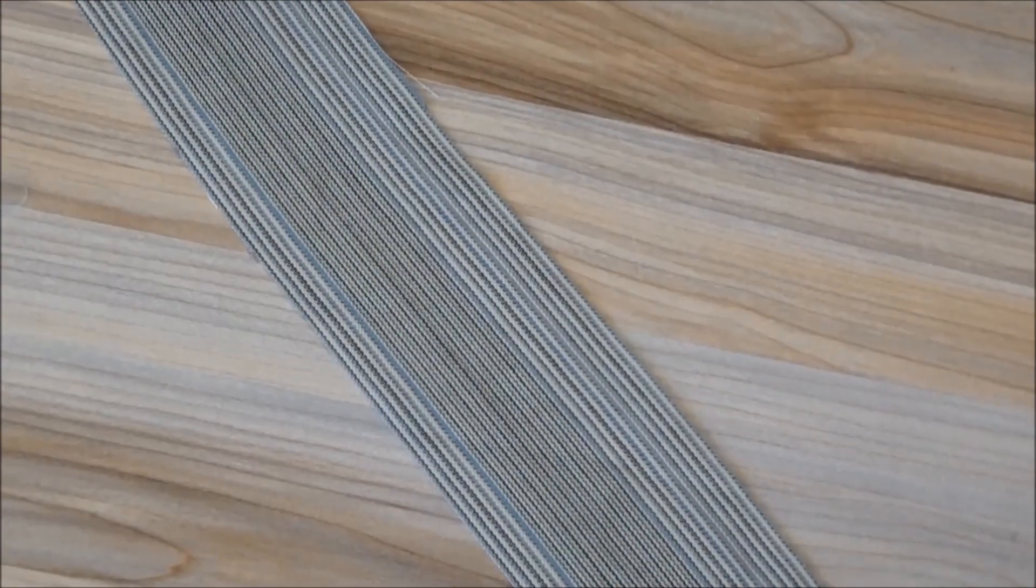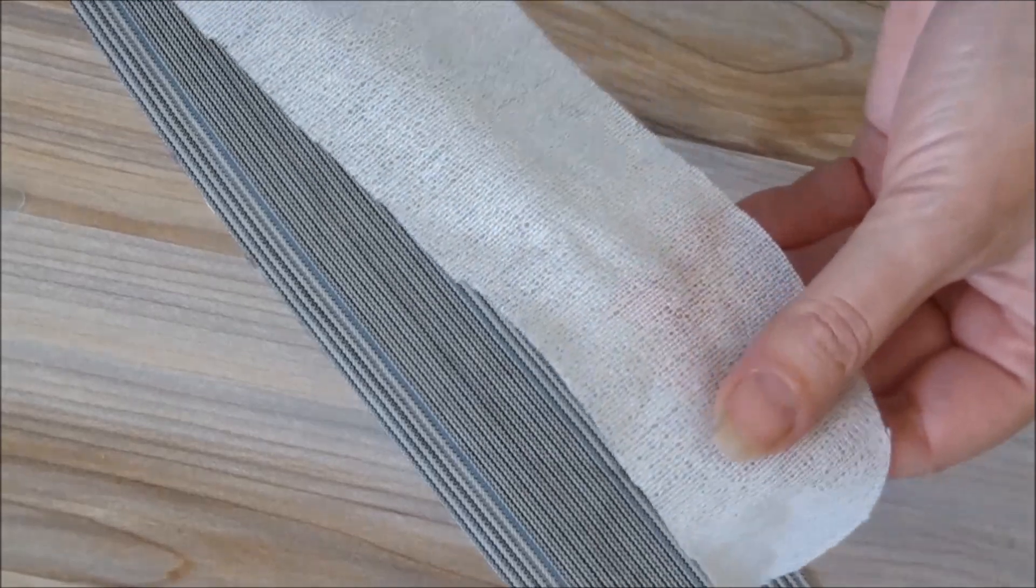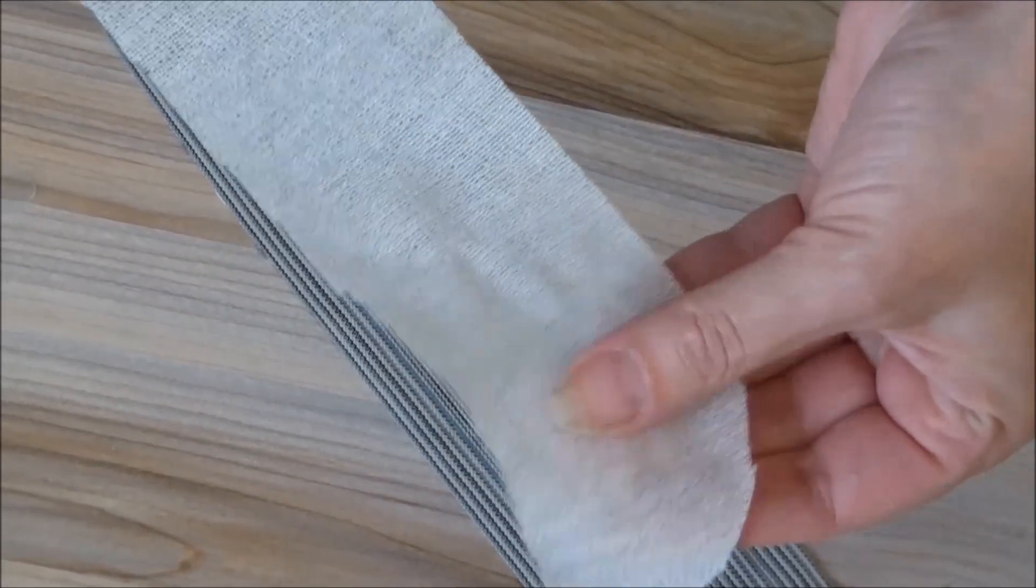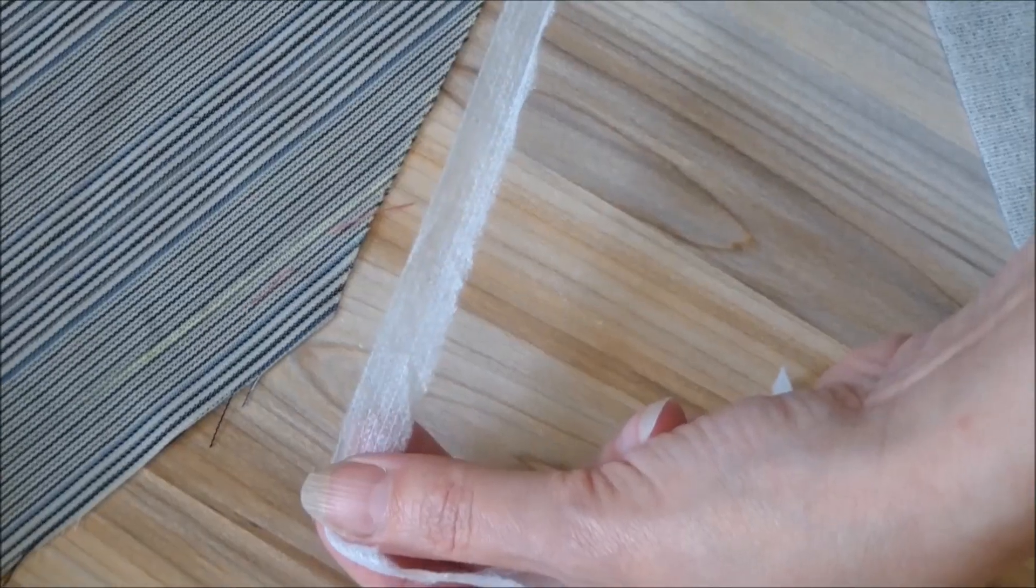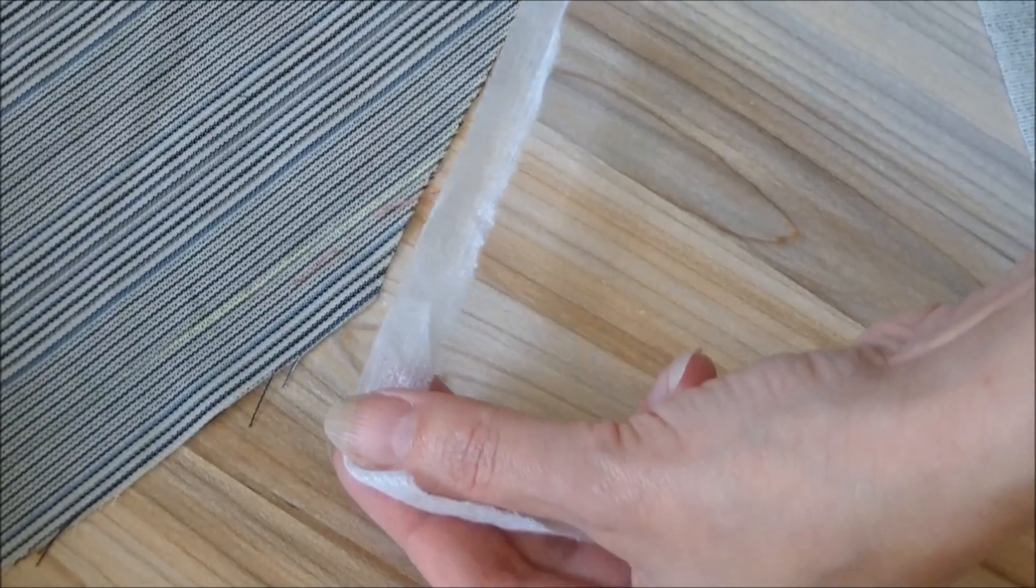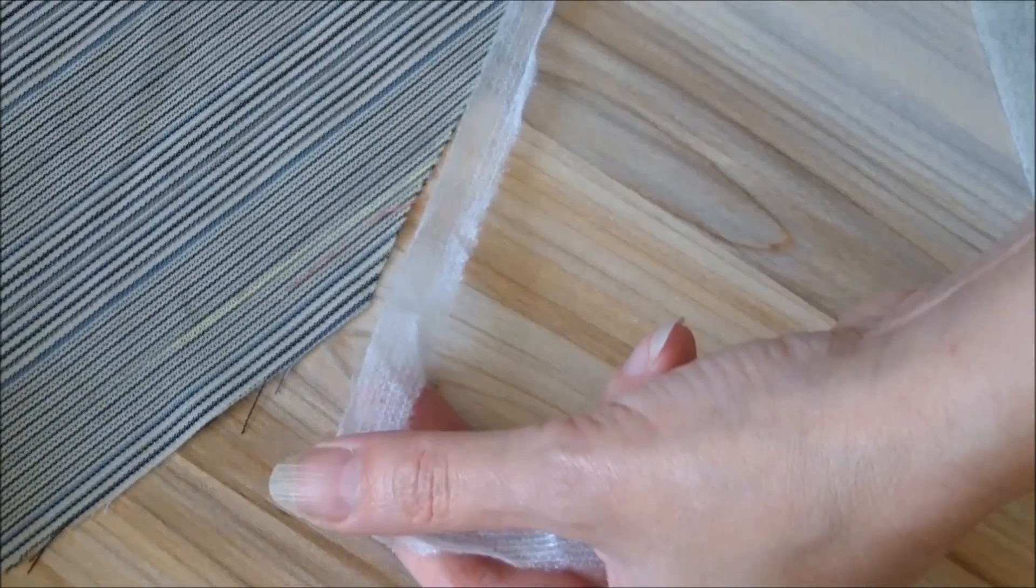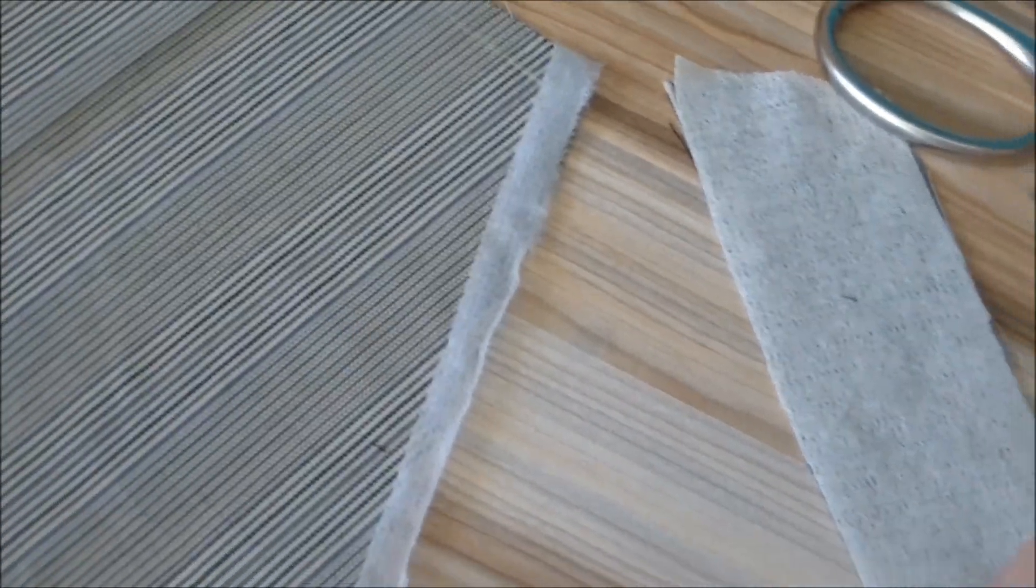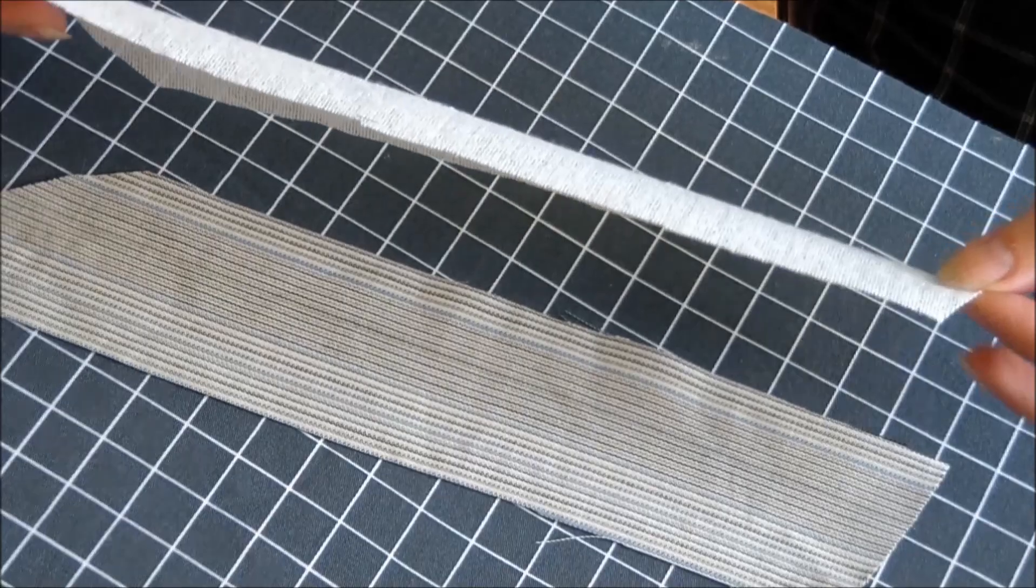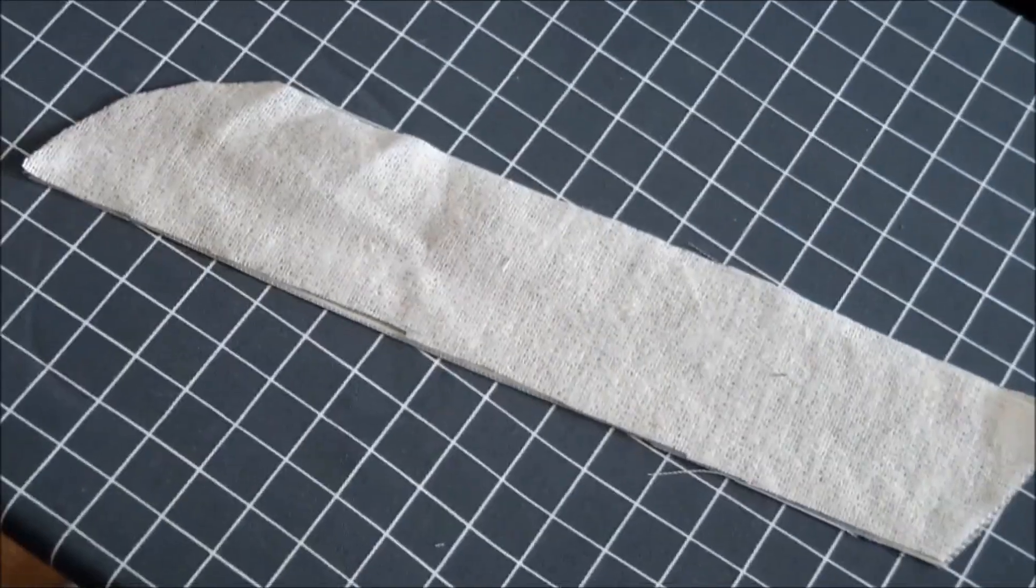This strip must be reinforced with an interfacing. The edge of the pocket entrance must be strengthened against stretching. This is done using an adhesive interfacing fabric. To do it is enough to cut off a narrow strip and fix it with an iron along the edge of the pocket on the wrong side of the fabric.